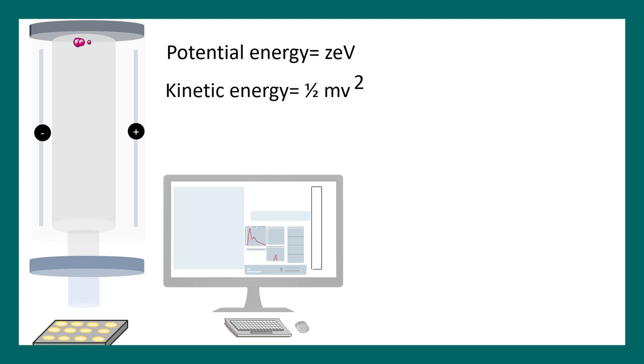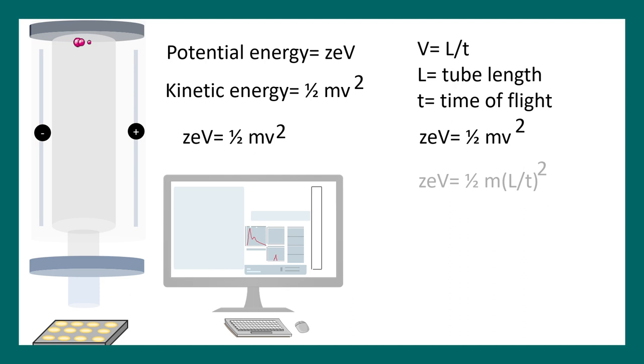The kinetic energy of these particles which are flying would be half mv squared, where mass is denoted by m and v is the velocity. As per laws of conservation of energy, these two would equate to each other. If the tube length is L and the time of flight is t, then the velocity of the particles would be v equal to L by t, simply distance versus time. We can modulate this equation into zeV equal to half m